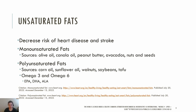Polyunsaturated fat sources include corn oil, sunflower oil, walnuts, soybeans, and tofu. Polyunsaturated fats also include omega-3 and omega-6 fatty acids. Omega-3 and omega-6 are essential, which means we need to obtain them from food since our body cannot make them. Omega-3s have been found to reduce triglycerides and slow the buildup of plaque in the arteries.